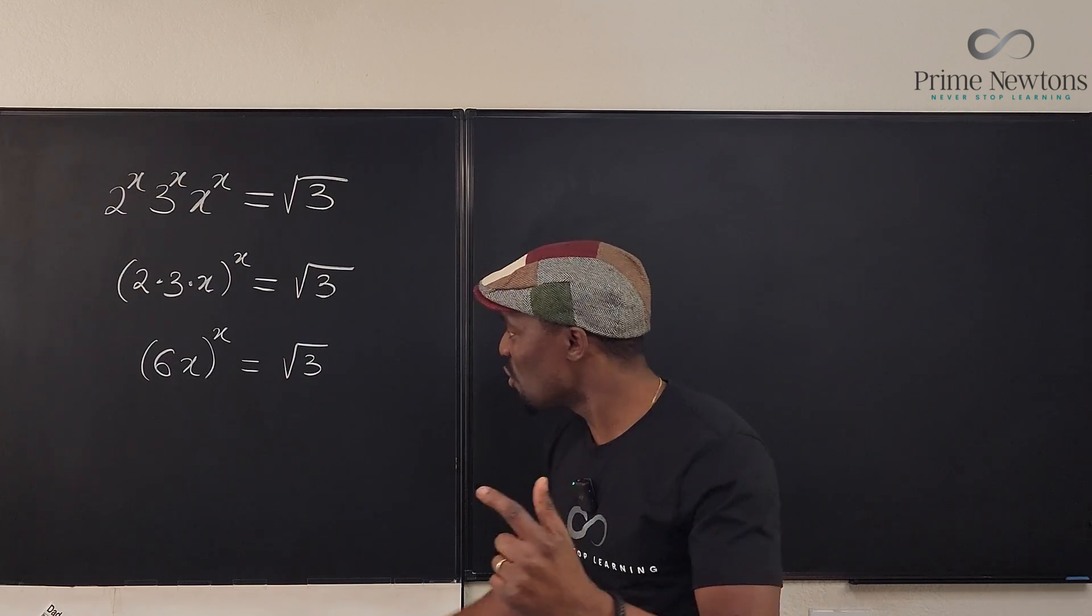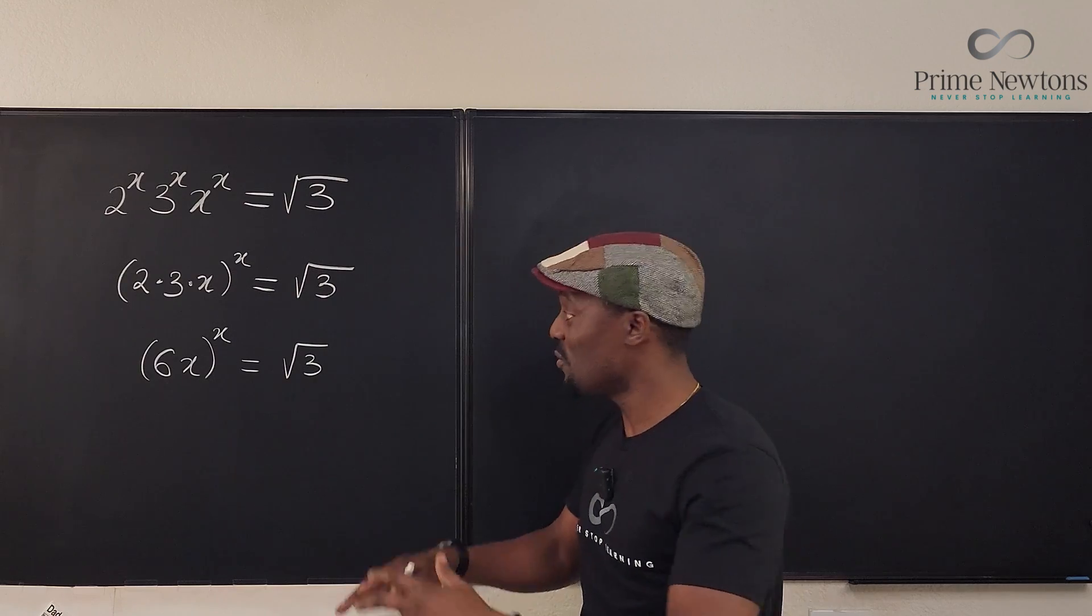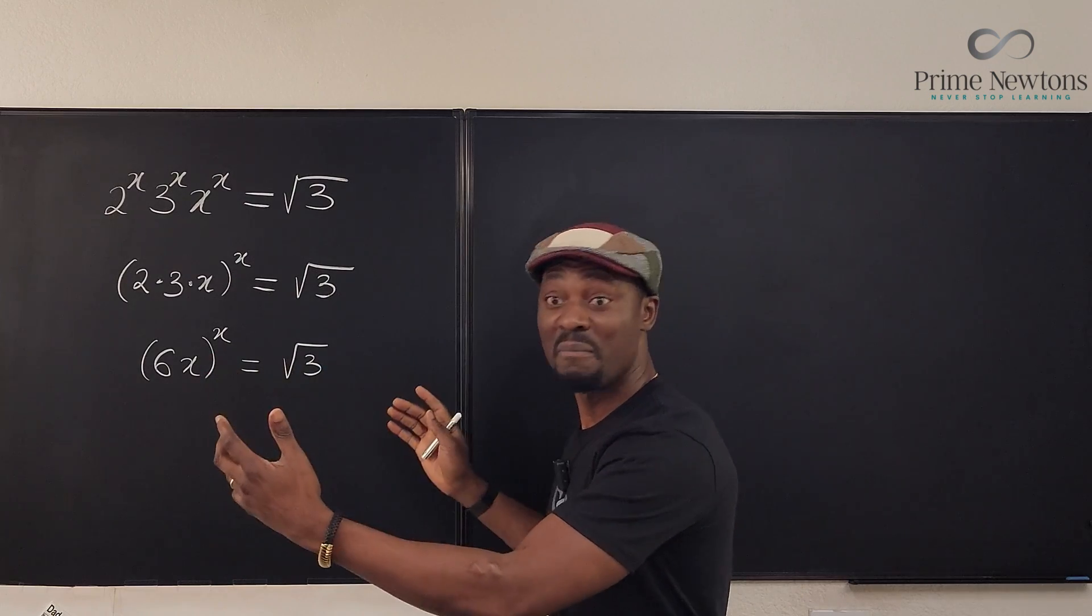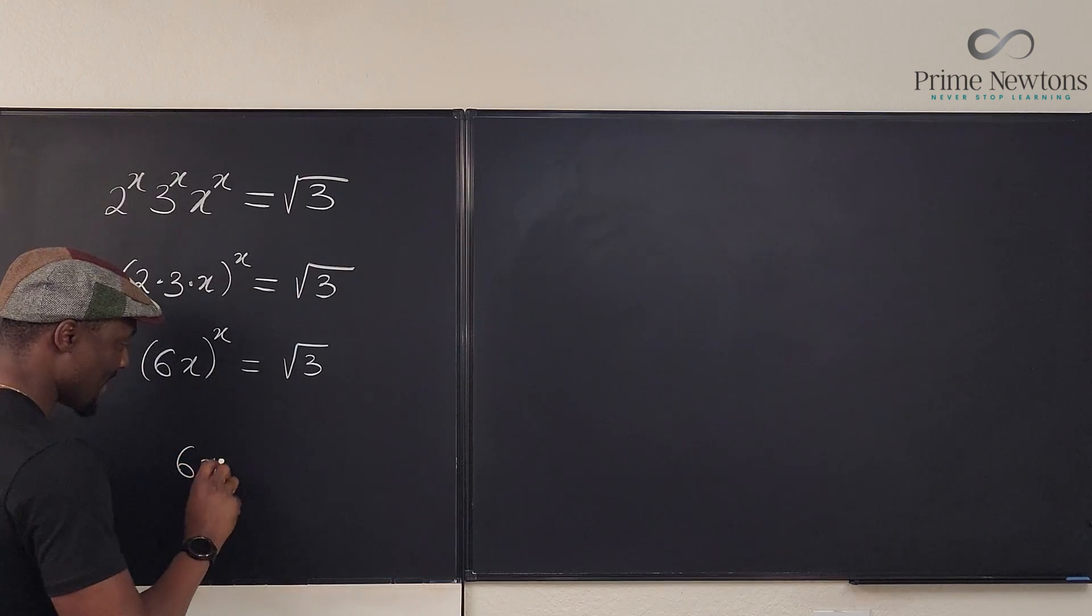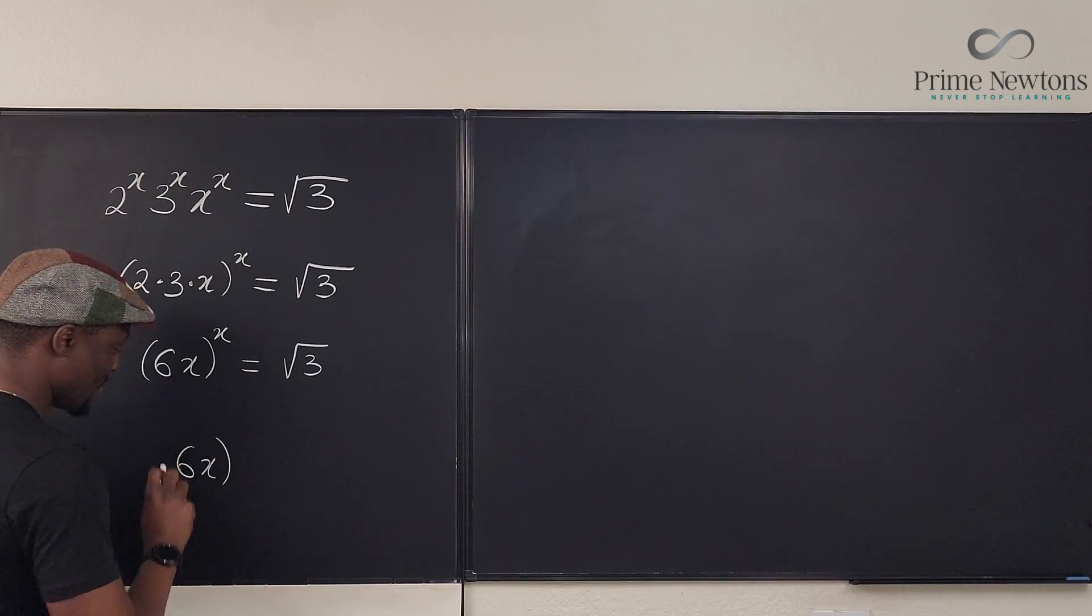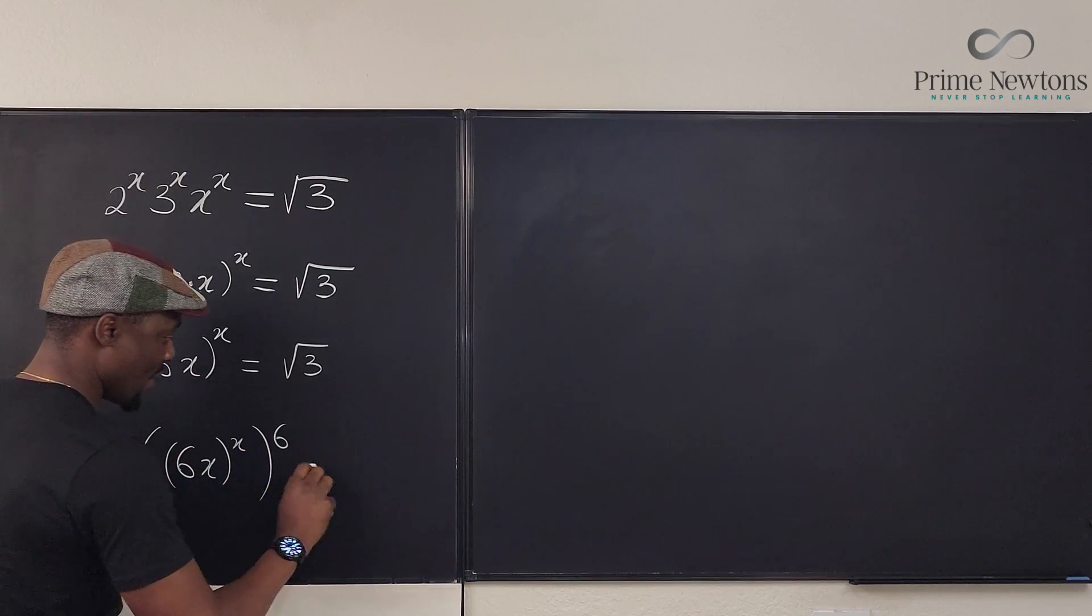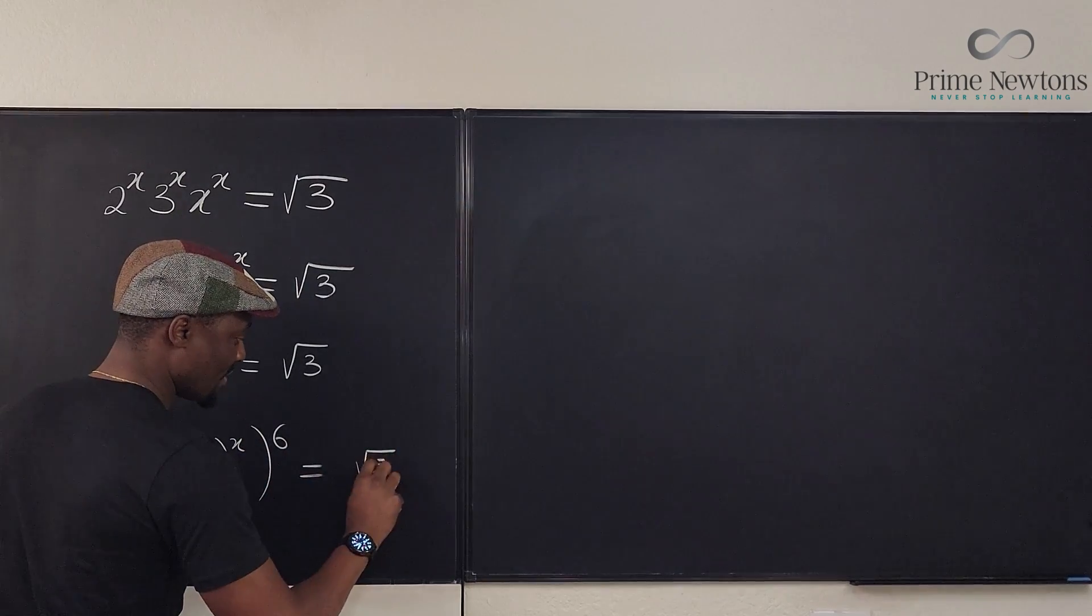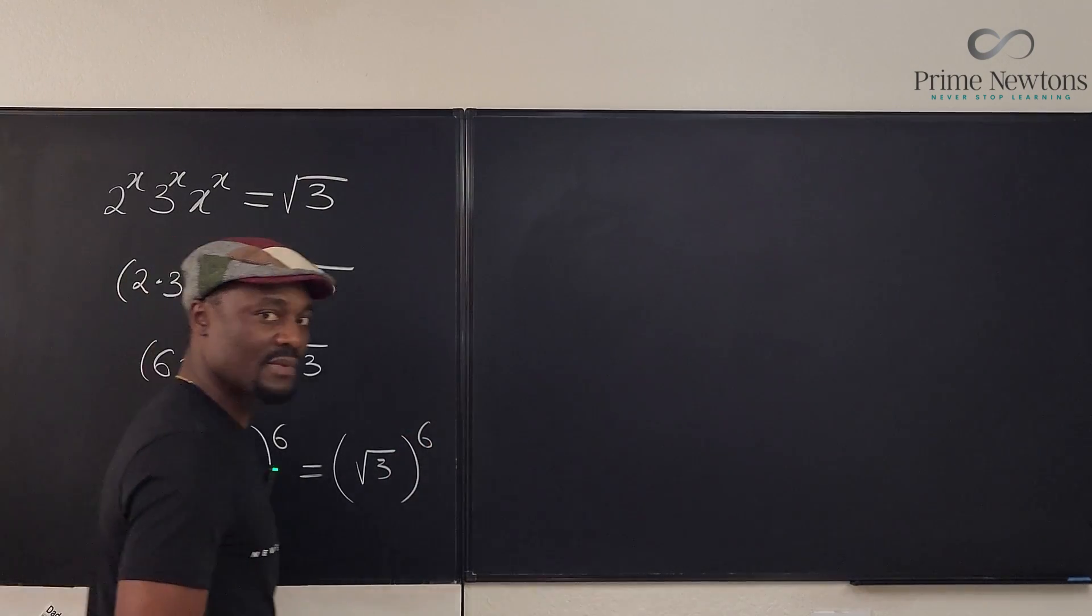Always think like that. So if we give this guy its own 6, the only way to do that is to raise both sides to the 6th power. So we could say that 6x raised to power x, then raised to power 6 will be equal to the root of 3 raised to power 6. Nice.